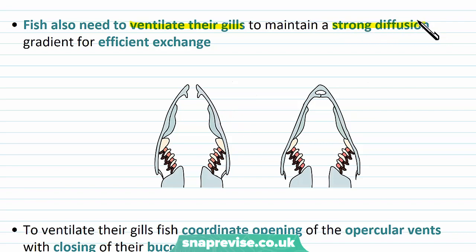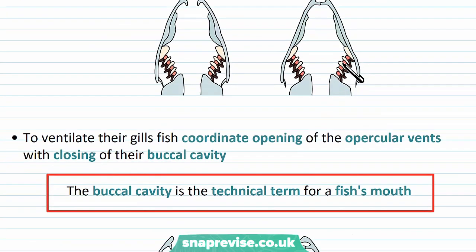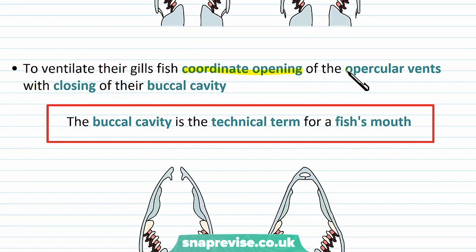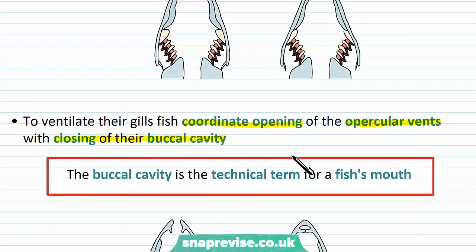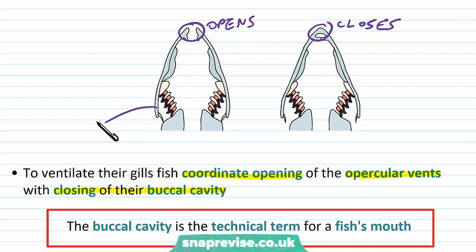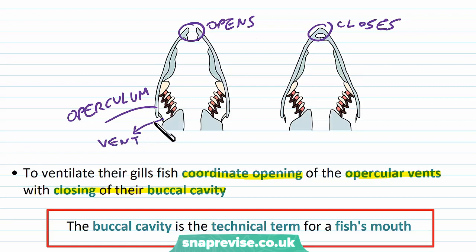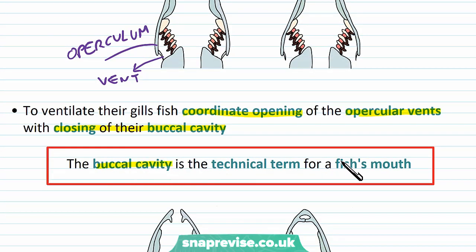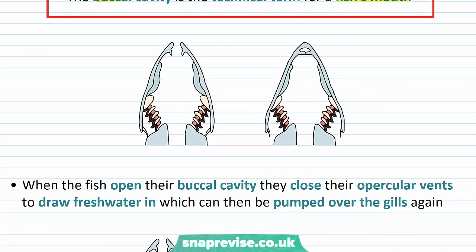The purpose of buccal pumping is maintaining a strong diffusion gradient for efficient gas exchange. The fish use the coordinated opening of the opercular vents and the closing of their buccal cavity to achieve this. The mouth opens and closes in time with the operculum that covers the fish gills. The buccal cavity refers to the fish's mouth — buccal always refers to the cheeks or the oral cavity — so this is the area into which water is breathed in.